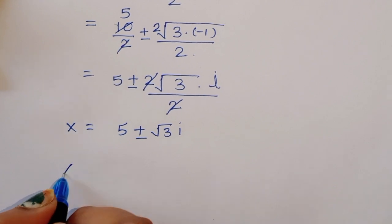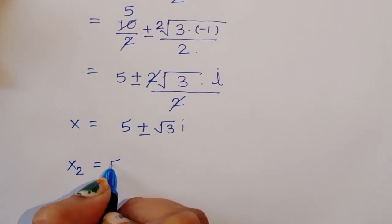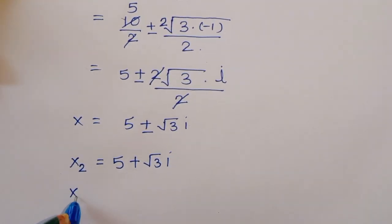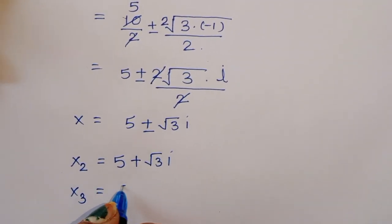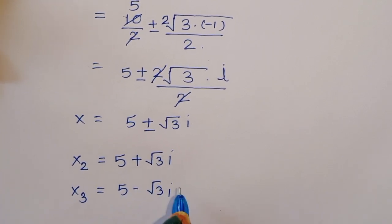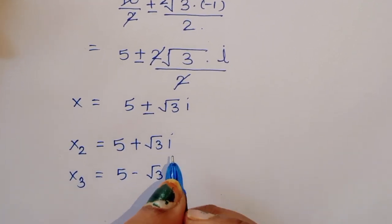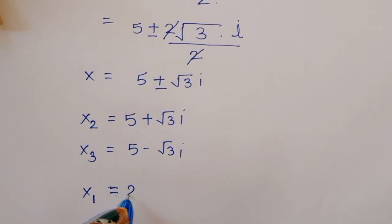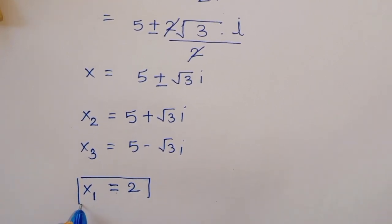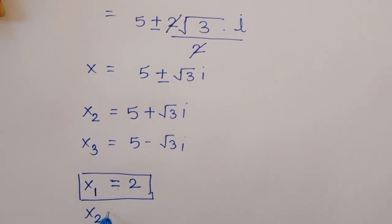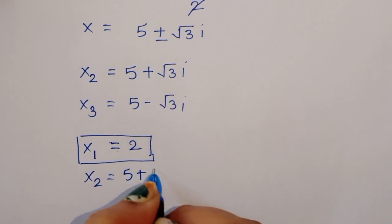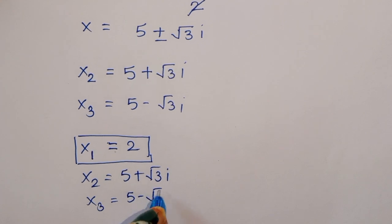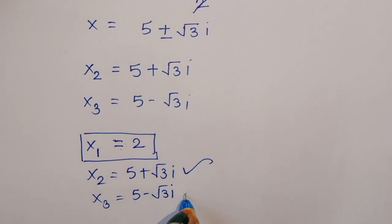So the three values of x are: x₁ = 2, x₂ = 5 + √3 i, and x₃ = 5 - √3 i. These are the three values. Thank you.